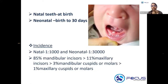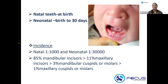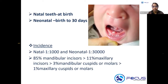Normally in the gum pad you don't see teeth — it's called a gum pad because they are alveolar processes at the time of birth. But in some selected cases you see teeth in the gum pad. Those teeth are referred to as natal teeth and neonatal teeth. Natal teeth are present at the time of birth, and neonatal teeth are present from birth to the first 30 days of life.